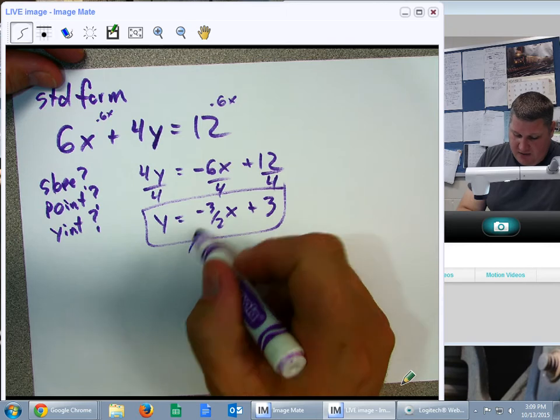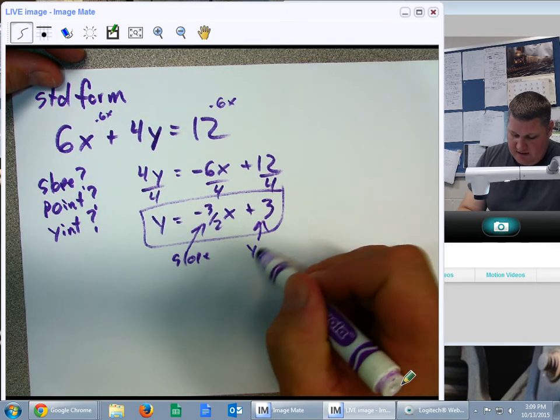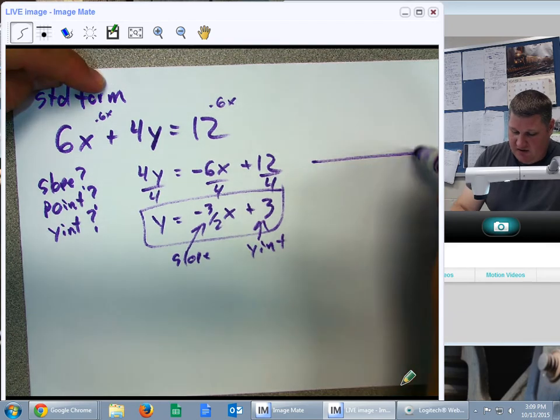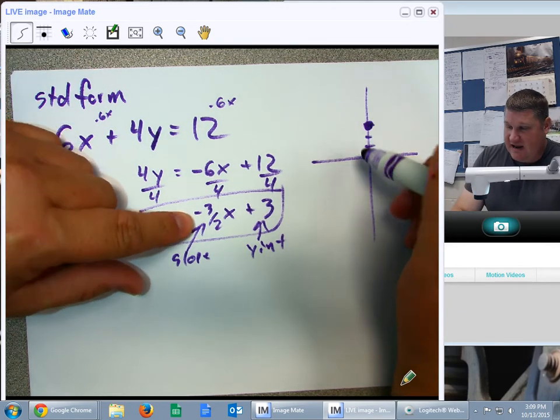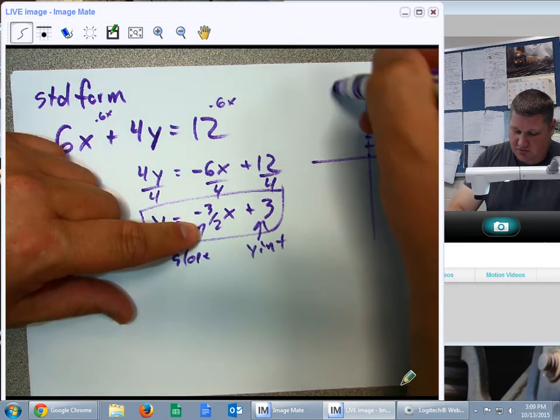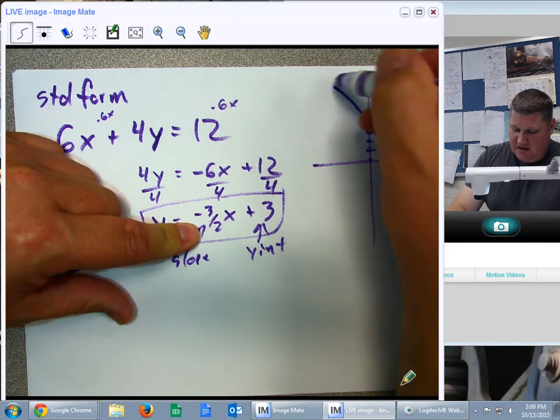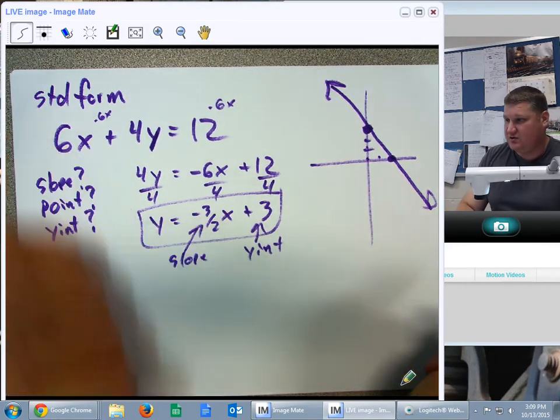That is our now form. And from this point, I can now clearly see there's my slope. Here's my y-intercept. And I can graph them pretty clearly. 1, 2, 3. Then, negative 3 halves means I go down 1, 2, 3, 1, 2, and over 2. And there's my slope. Negative slope up through 3 looks pretty good.